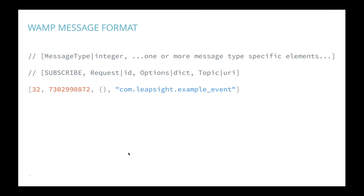WAMP is a very simple protocol. All messages are lists containing what you could define as JSON objects. This is an example of a subscribe message: subscribe is message type number 2, every message has a request ID for that session, it may have an options object, and in this case it is subscribing to a topic called 'com.leapsite.example.event'.